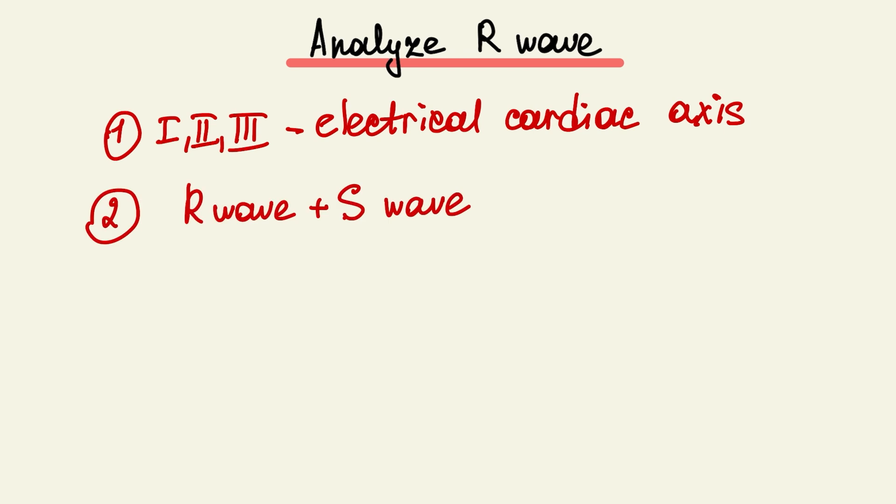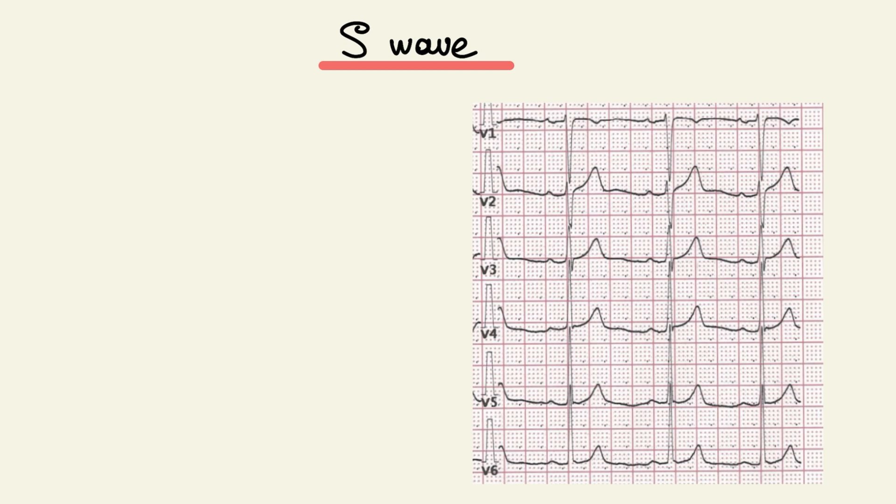And we analyze R wave and S wave together at chest leads for diagnosis ventricular hypertrophy. S wave amplitude can be less than 20 mm. And in normal situations we can see large S waves and small R waves at lead V1, V2, V3. And large R waves and small S waves at lead V4, V5, V6.